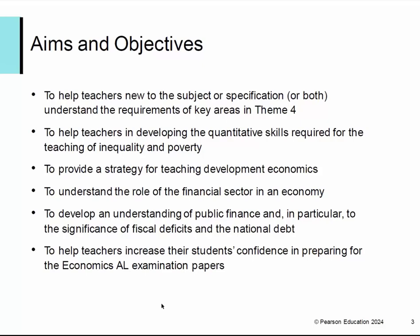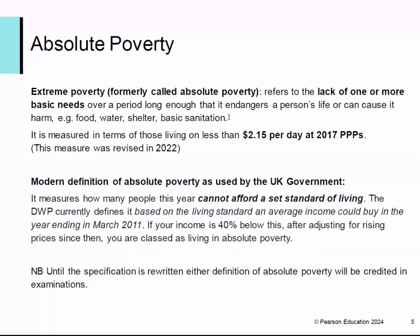First of all we're looking at poverty and inequality, and this first issue is quite an issue and it really is another illustration of why the spec needs to be updated. Extreme poverty used to always be referred to as absolute poverty — it's lack of one or more basic needs over a period of time, and you can see from that measurement there you will get a clear result of what is meant by absolute poverty.